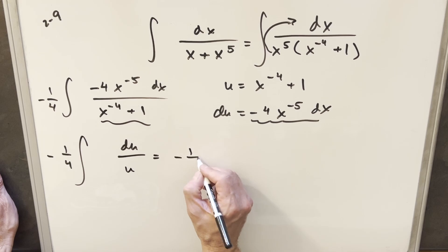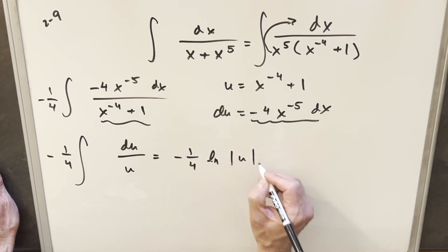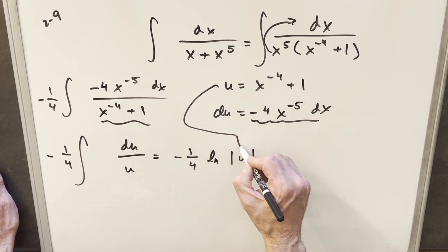Now, integrating this, I'm going to have minus one fourth natural log absolute value of u. All I need to do to finish this off is just back substitute.